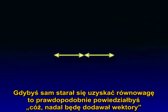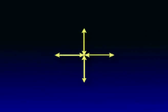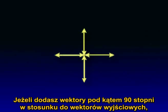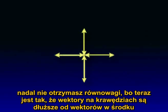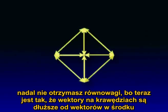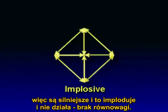If you were trying to get an equilibrium yourself, you would probably just keep adding vectors. But if you add vectors at a 90-degree angle from the initial vectors, you're still not going to get equilibrium, because now the edge vectors are longer than the vectors to the center — so they're stronger. It implodes. It doesn't work. No equilibrium.